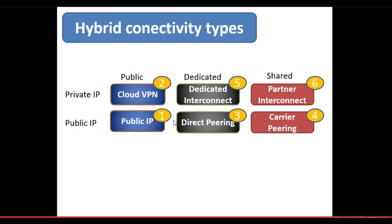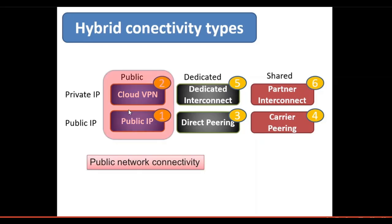Let us now map each connectivity type with a number before going into detail. One: public IP address. Two: Cloud VPN. Three: direct peering. Four: carrier peering. Five: dedicated interconnect. Six: partner interconnect. The simplest connectivity option is to use the standard network connectivity you already have. Under this, there are two options: Cloud VPN for private IP and public IP for public IP address access. Both are based on standard network connectivity and do not require big bandwidth.